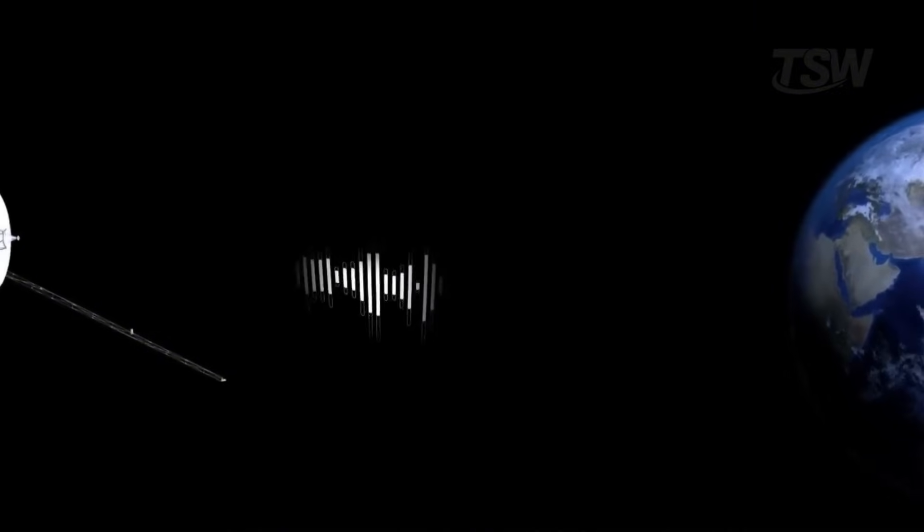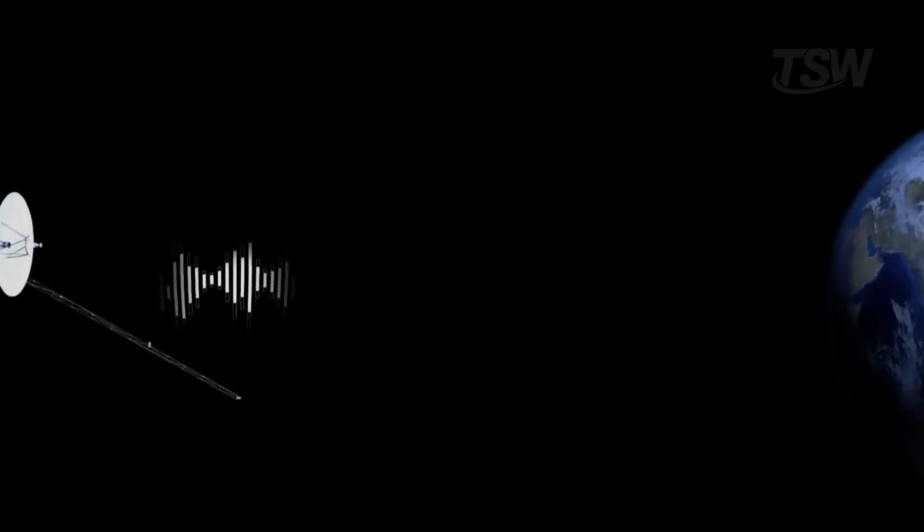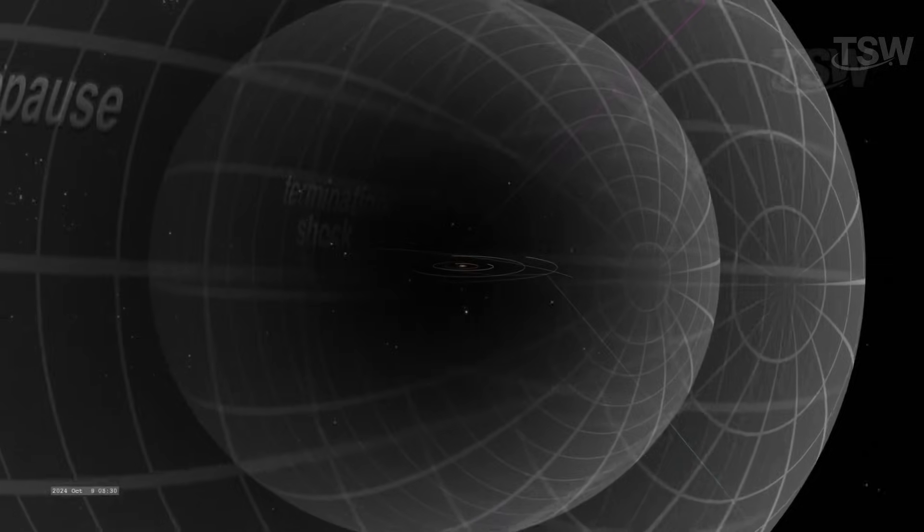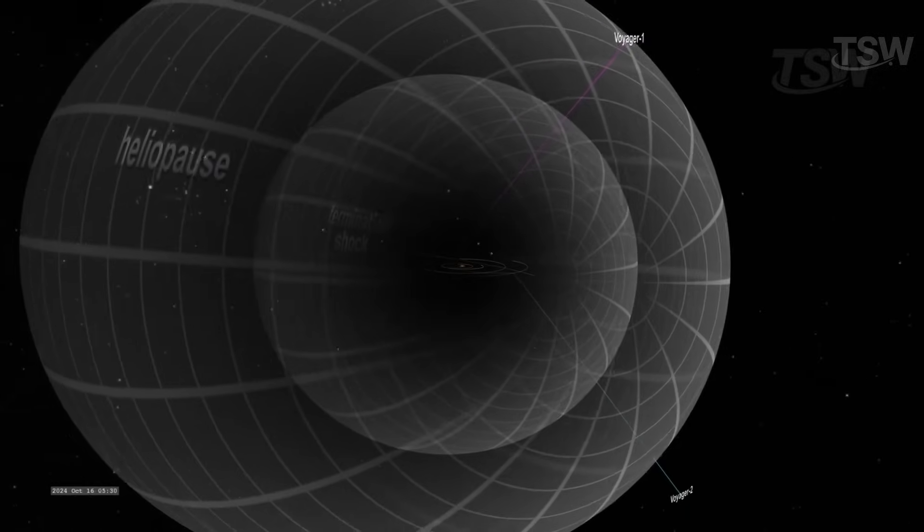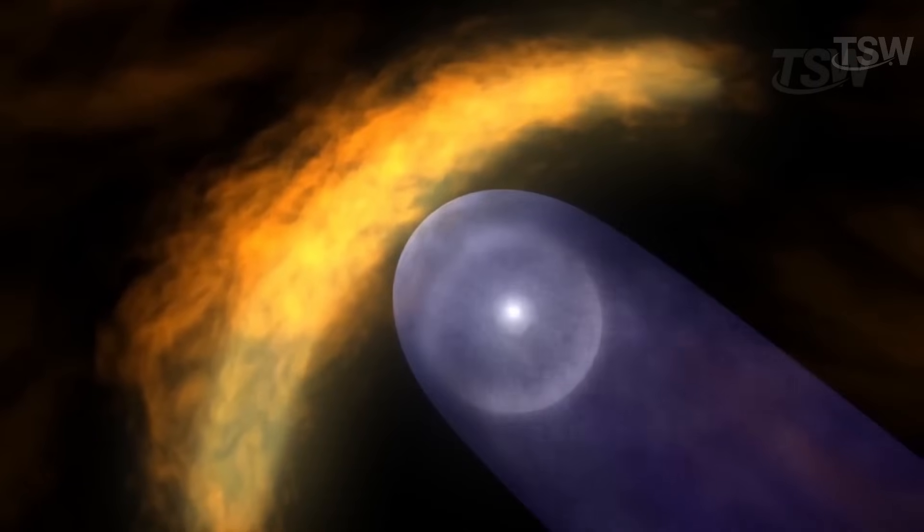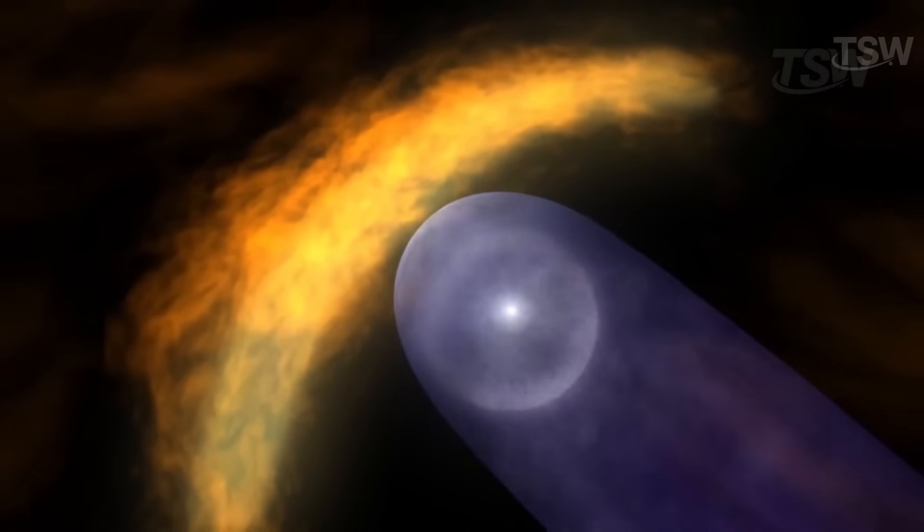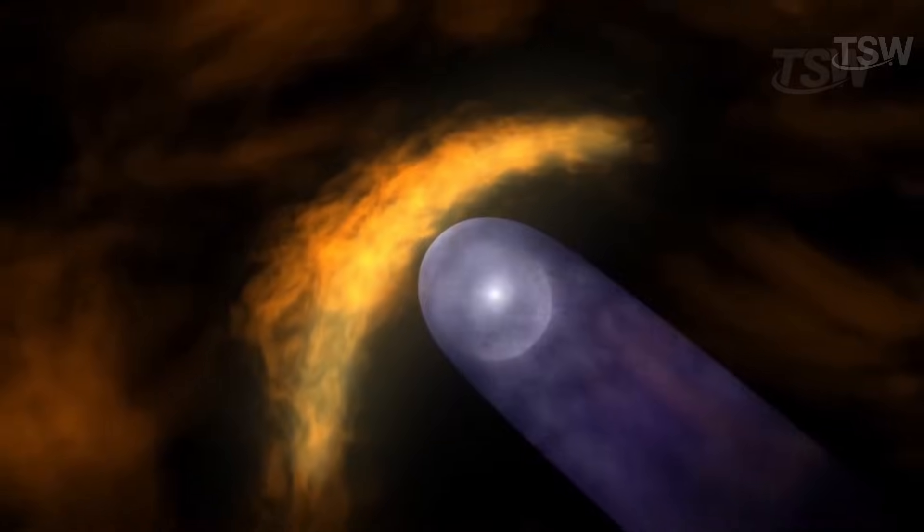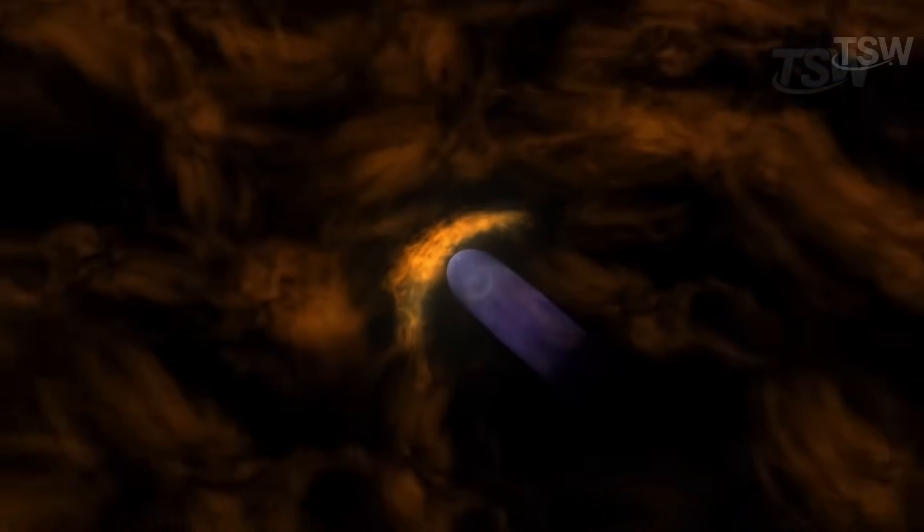In the latest tracking, the signal's travel time already exceeds 23 and a half hours and keeps growing, while the probe advances along the escape trajectory that led it, in 2012, to cross the heliopause, the boundary where the solar wind and the sun's magnetic field lose strength and give way to the rarefied plasma between the stars.